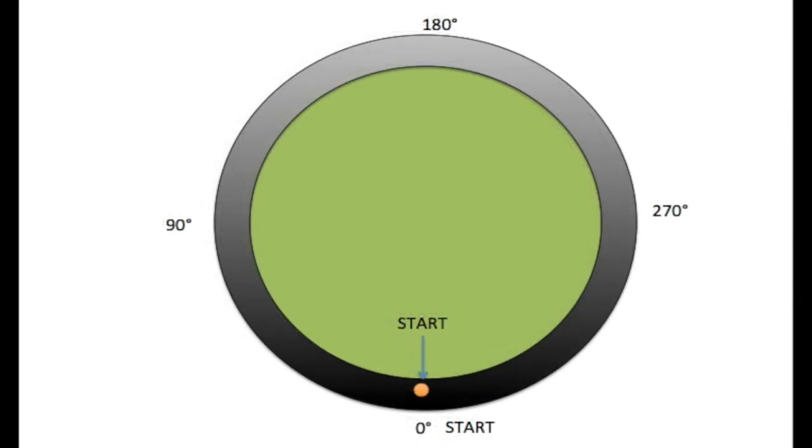Now what you have just seen is a runner running around the track, but obviously this runner took more than one second. Now if this runner was really fast like the flash in the TV show for instance, if this runner was able to run around this track in one second, that would be called one hertz.